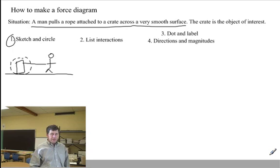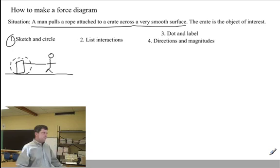I've circled my object of interest. I usually use a dotted line for that, just because I do. That's step one. We've sketched the situation and circled the object of interest.